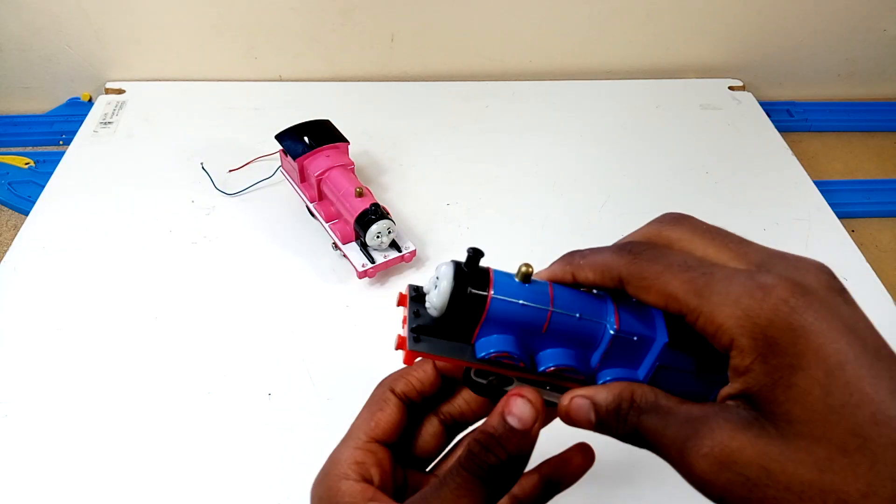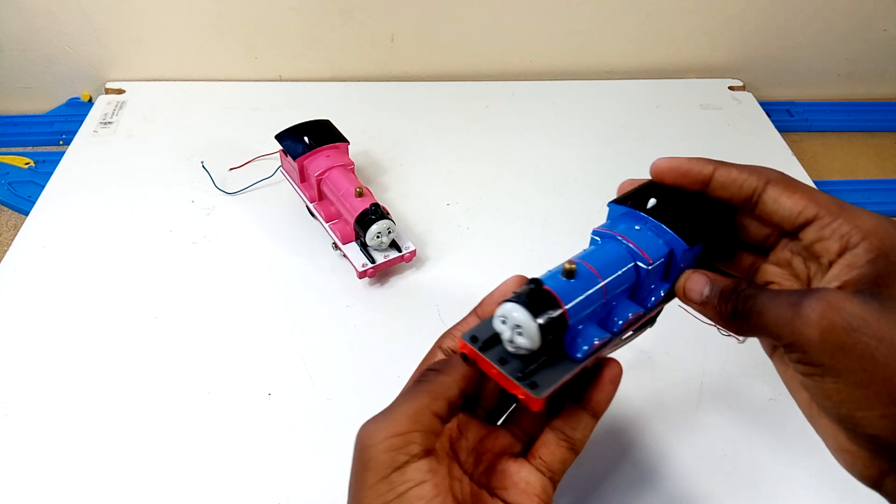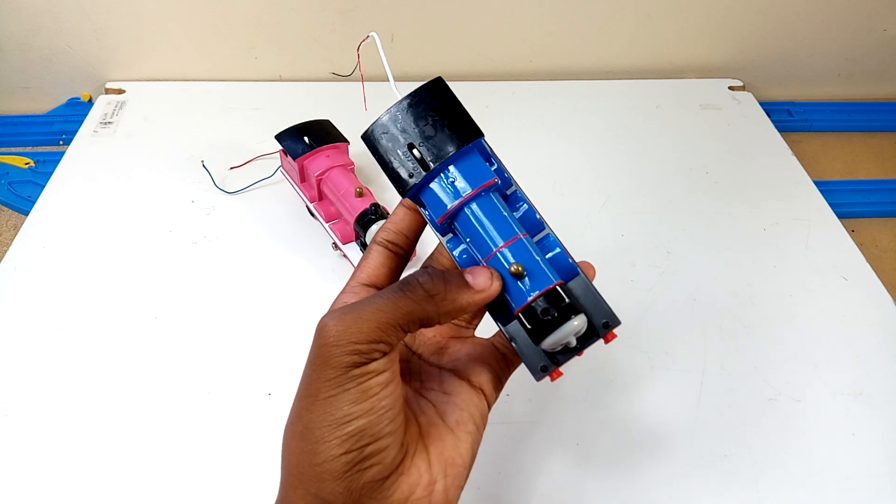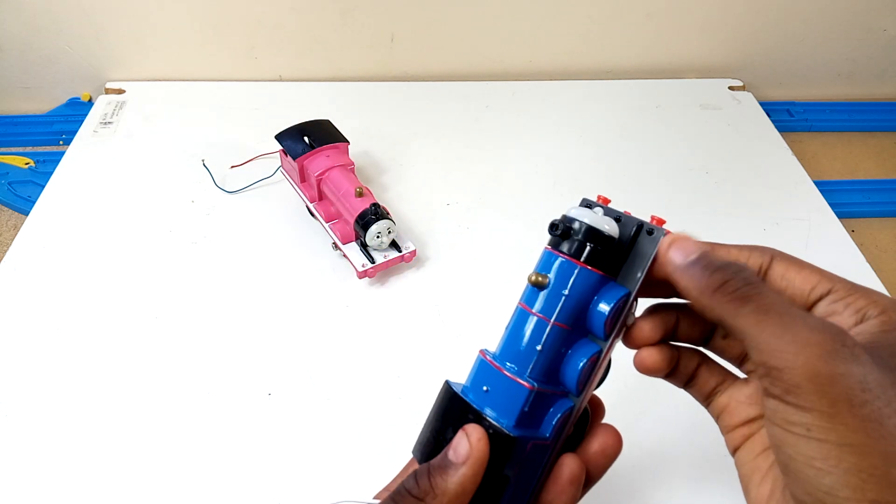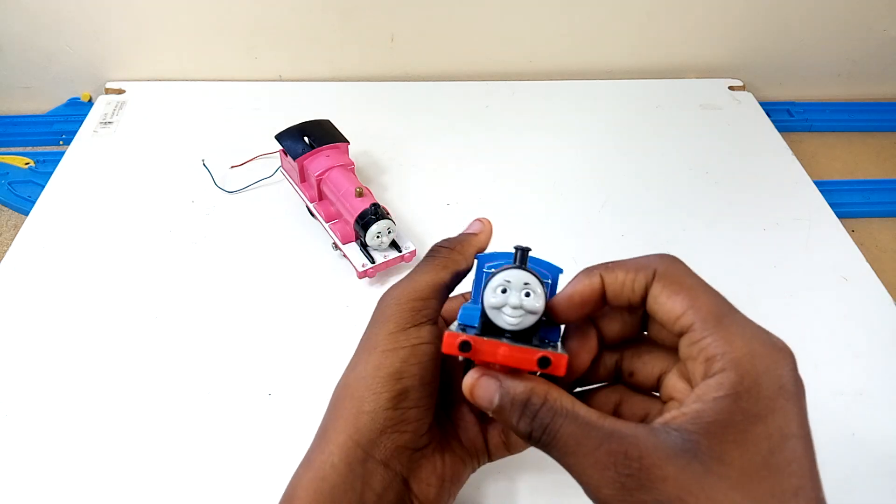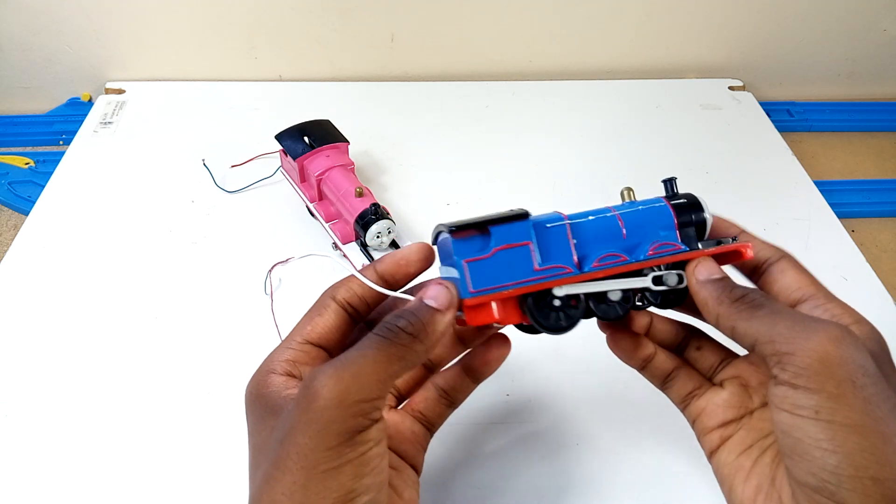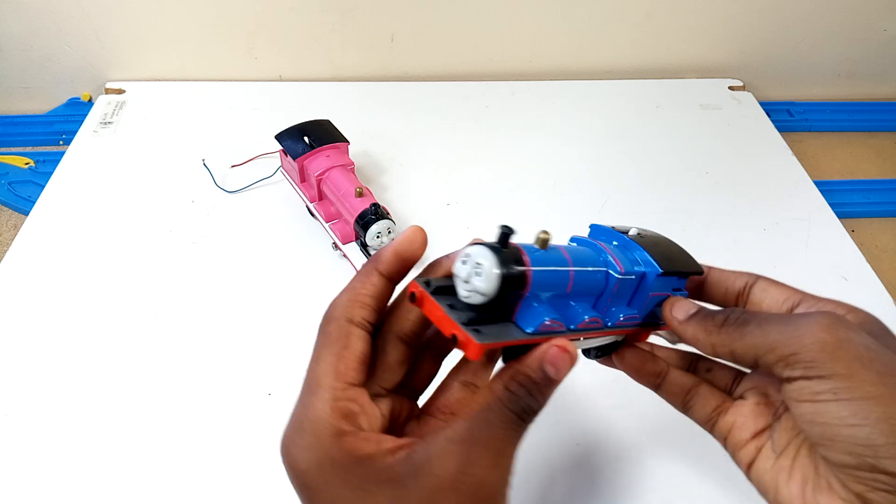And then I'm also working on another Blue James. And instead of the black running board, I actually bought some grey paint, some charcoal grey. And so that's the color of his running board. And again, I'm waiting on the tender for this one as well.